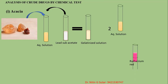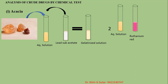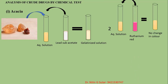The second test: the aqueous solution of acacia is to be treated by utilizing a ruthenium red solution. No change in color is to be observed. The no color change indicates that acacia is present. In the case of tragacanth, you get a pink color with ruthenium red, but no color change occurs with acacia.